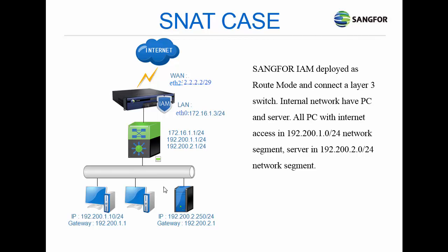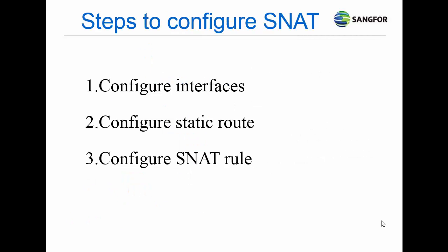Servers are in the 192.200.2.0/24 network segment. There are 3 steps to configure SNAT. Firstly, configure the interface. Secondly, configure static routes. And lastly, configure the SNAT rule.